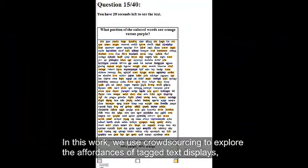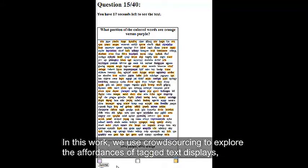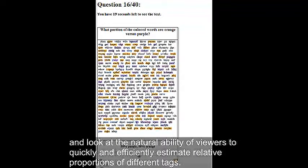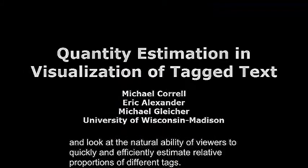In this work, we use crowdsourcing to explore the affordances of tagged text displays and look at the natural ability of viewers to quickly and efficiently estimate relative proportions of different tags.